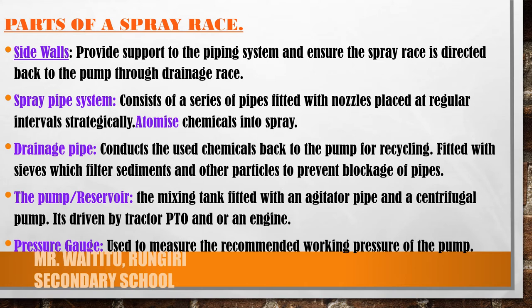The drainage pipe conducts used chemicals back to the pump for recycling. It is fitted with sieves which filter sediments and other particles to prevent blockage of pipes. The pump is a mixing tank filled with an agitator pipe and a centrifugal pump driven by the tractor PTO or an engine. The pressure gauge is used to measure the recommended working pressure of the pump.